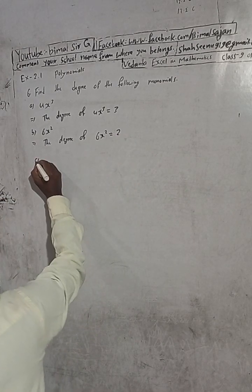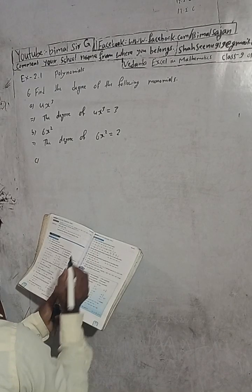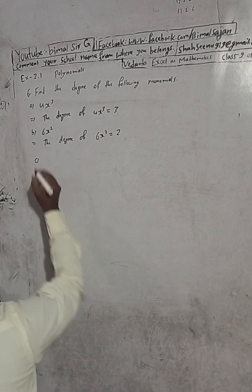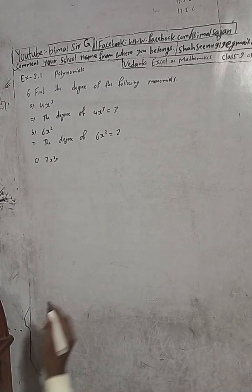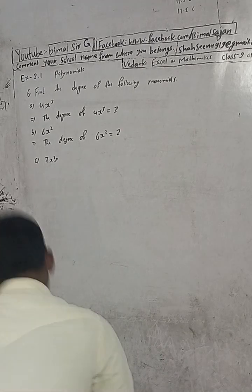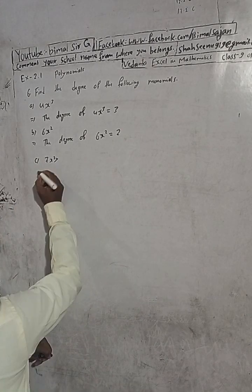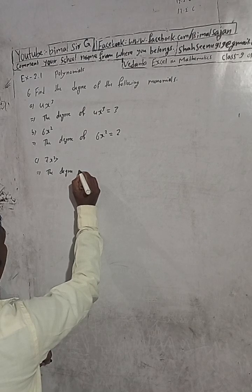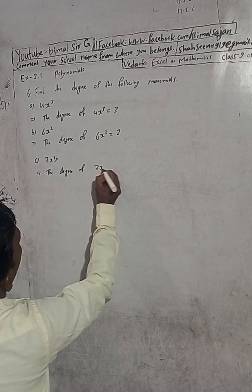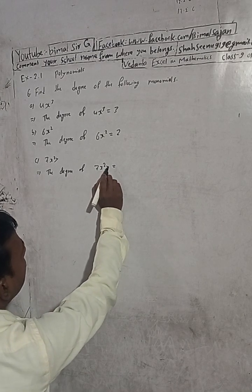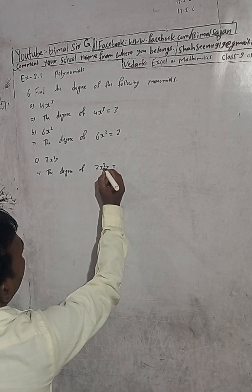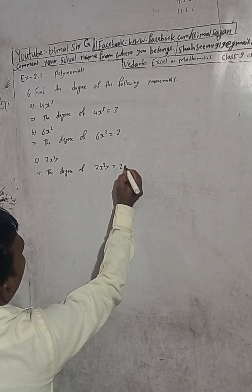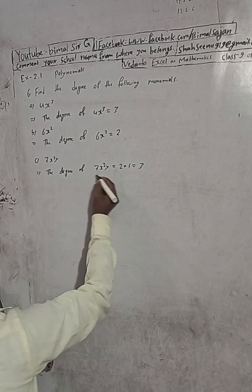Now question 6(c): the monomial is 7x squared y. So the degree of 7x²y — you can see there are 2 variables, x and y. The power of x is 2 and the power of y is 1 (nothing means 1). So 2 plus 1 is equal to 3. Therefore the degree of this is equal to 3.